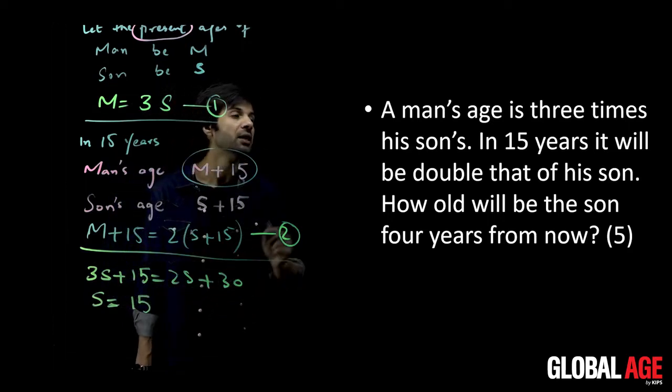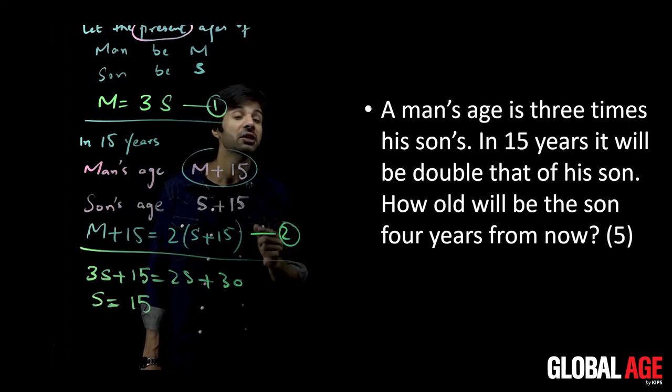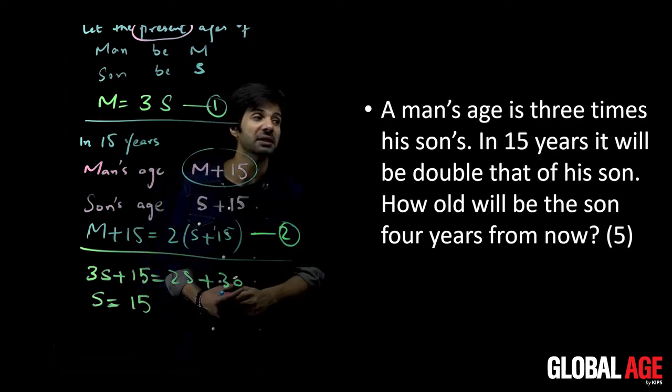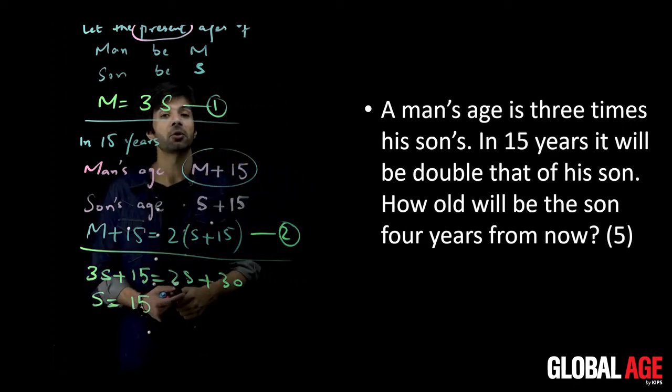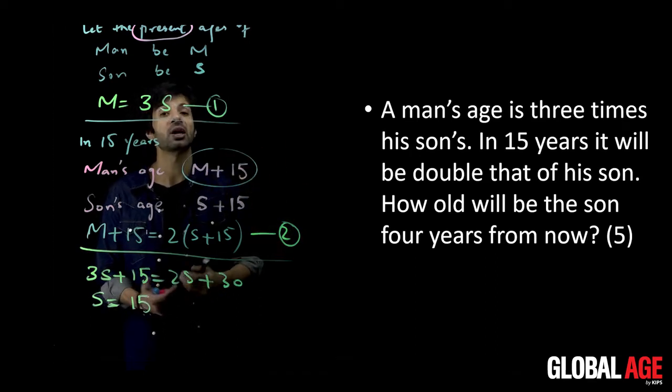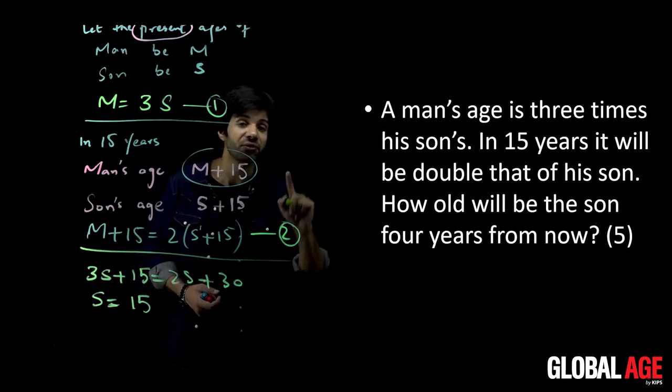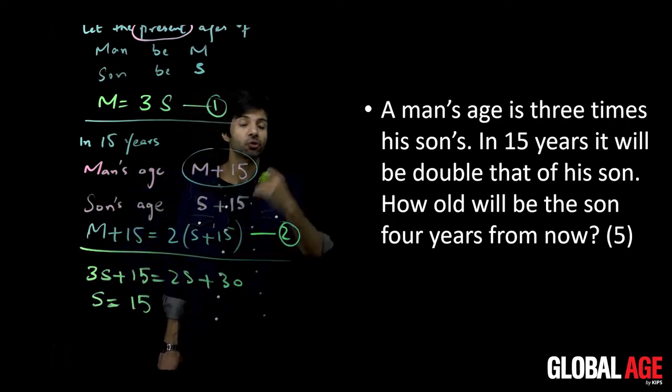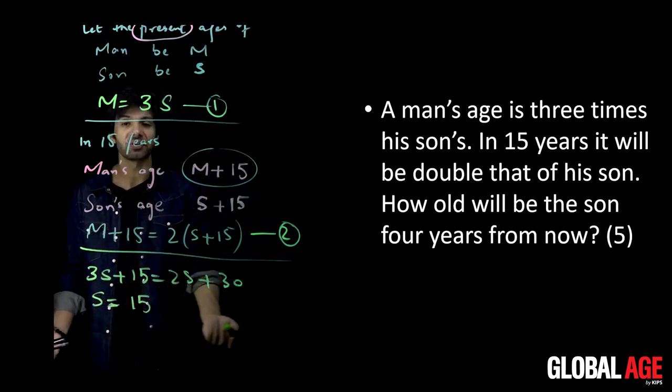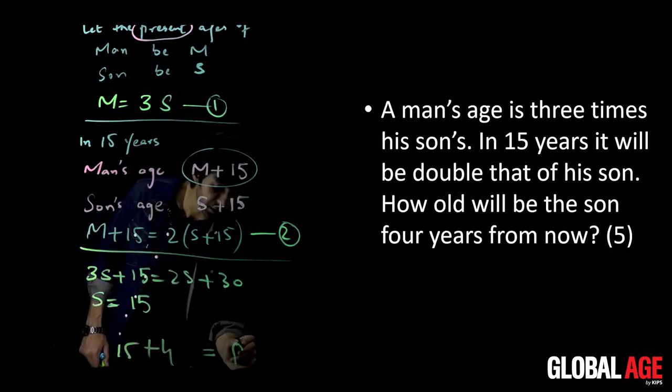This means the son's present age is equal to 15 years. How old will be the son four years from now? Now he's asking about the question from the other side. How old will be the son four years from now? From now can be used in past as well as future, but here will is written, asking about future. So 4 years after, son will be 15 plus 4, which is equal to 19 years old.